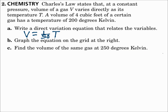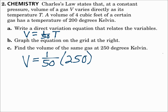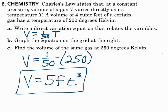Part c: find the volume of the same gas at 250 degrees Kelvin. Use the formula v equals 1 fiftieth T. Since we know T, substitute 250 in for T. Work that out and v is 5. The units for volume here are cubic feet, so the answer is 5 feet cubed. Use your formula, substitute in the value they give you, and solve for what they don't give you.